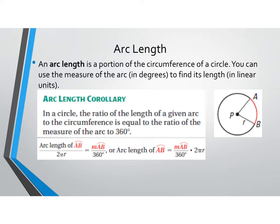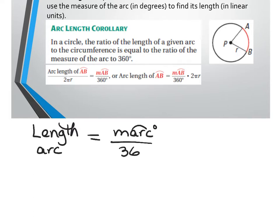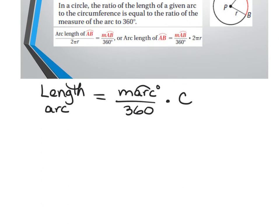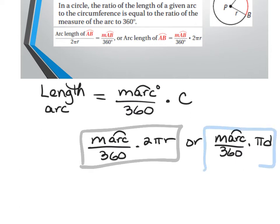To find the length of the arc, the length of the arc is a portion of the circumference. You're going to take the measure of the arc, which will be in degrees, divided by 360, and then multiply it by the circumference. If they give us a radius, the formula is: measure of the arc divided by 360 times 2πr. If they give us a diameter, it'll be πd at the end — measure of the arc over 360 times πd.